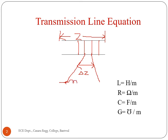Each two-wire line segment has a high-frequency inductance and one resistance. There is a capacitance between the two wire lines, and there can be a charge leakage through conductance.